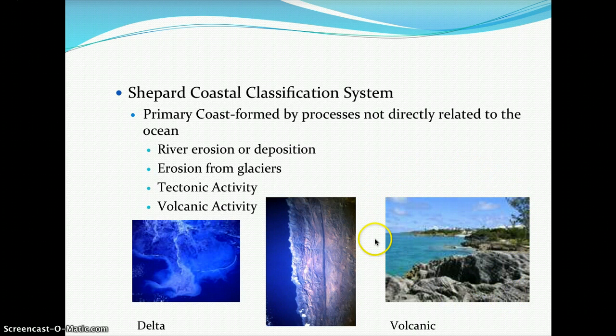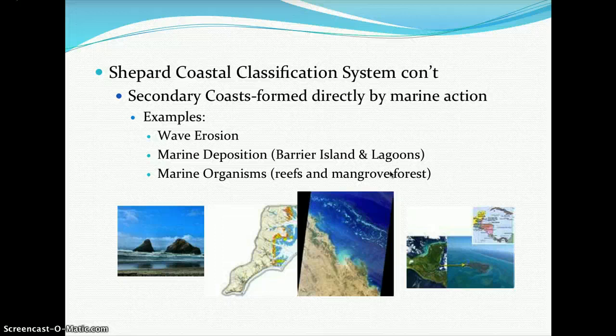Secondary coastal formations are formed directly by marine action. These include coastal formations caused by wave erosion, marine deposition such as barrier islands and lagoons, and marine organisms such as reefs and mangrove swamps or mangrove forests, which you can see in the southern United States.